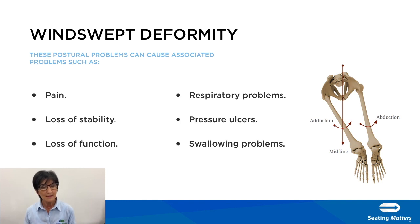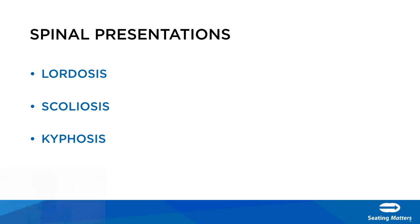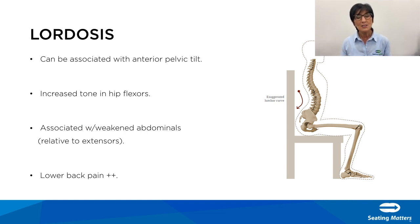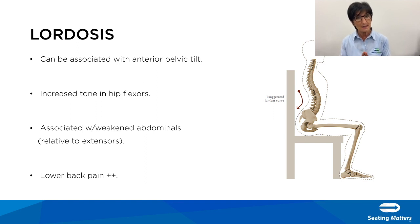Lordosis is usually associated with anterior pelvic tilt. It's caused by increased tone in the hip flexors and weakened abdominal muscles, and people with lordosis usually complain of back pain. As with all conditions, we need to establish whether it is fixed or flexible, because within the chair we want to either accommodate or correct the posture. Practical demonstrations of fixed versus flexible assessment will be covered in a future seminar.